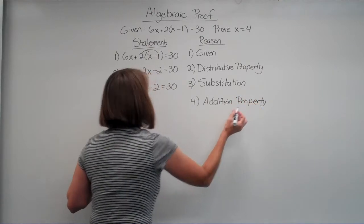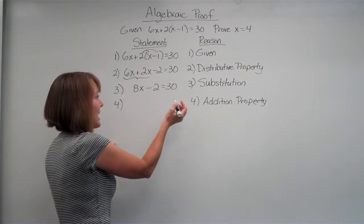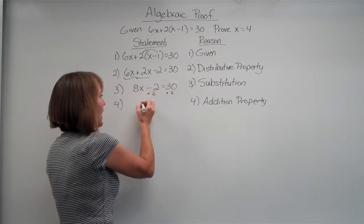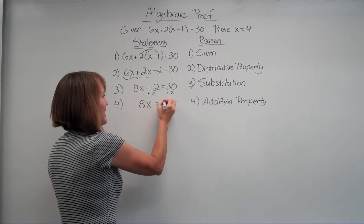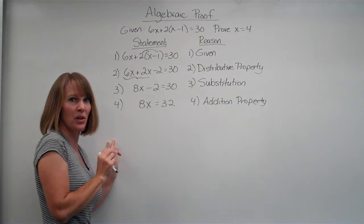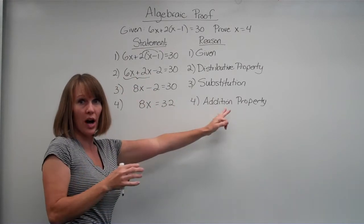Now, why this is a little confusing is because we're not actually writing our step down. We're writing the result. So if I had done plus 2 on both sides, I would have 8x is equal to 32. We're not actually writing that step in though. What we did and why we did it.